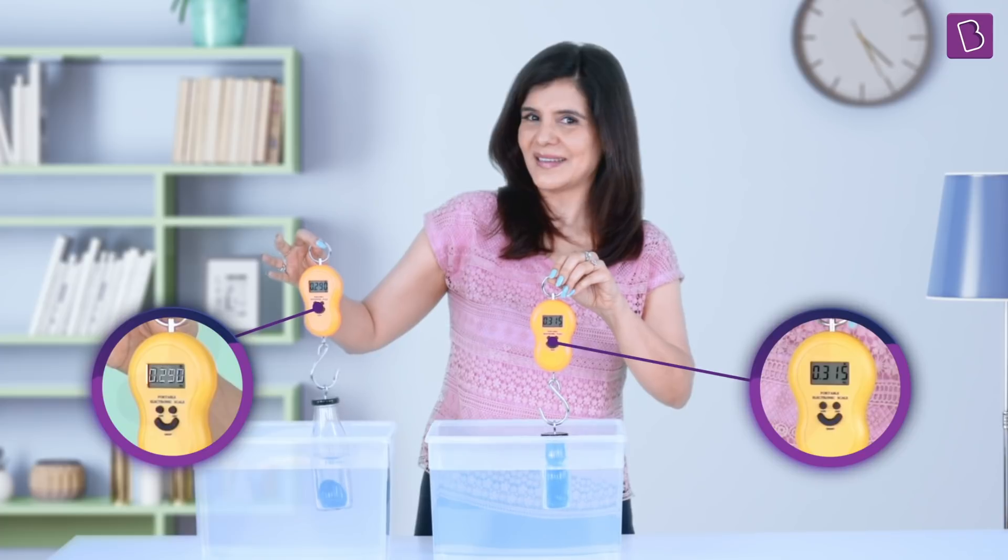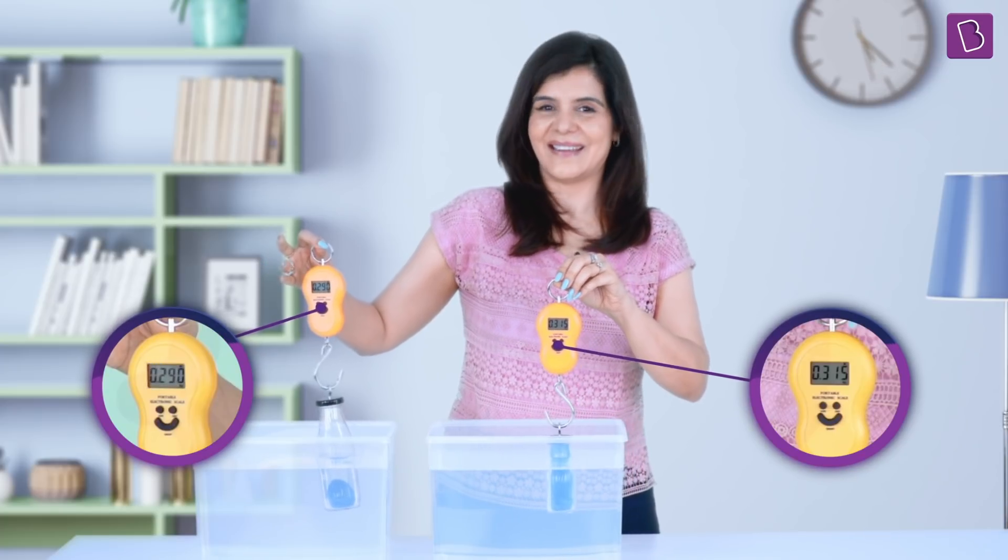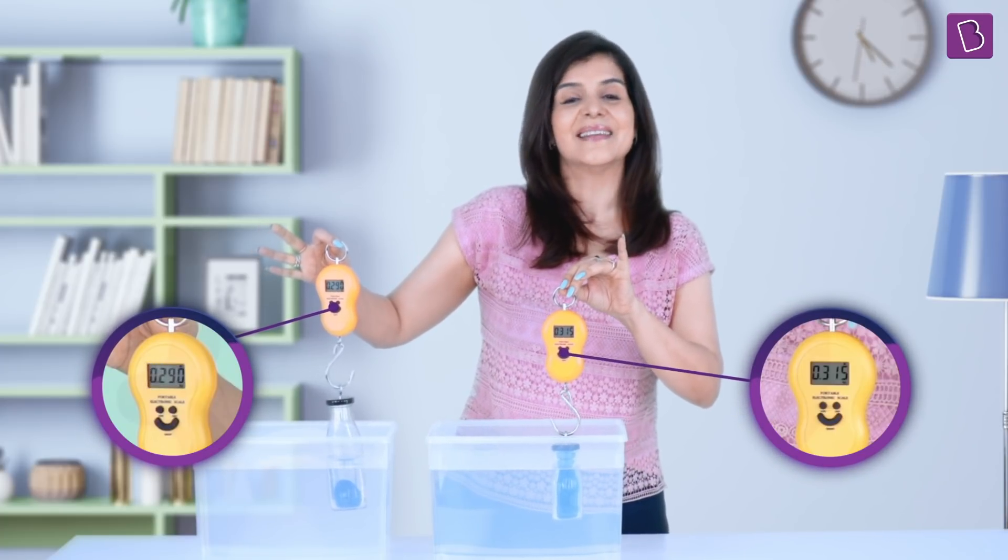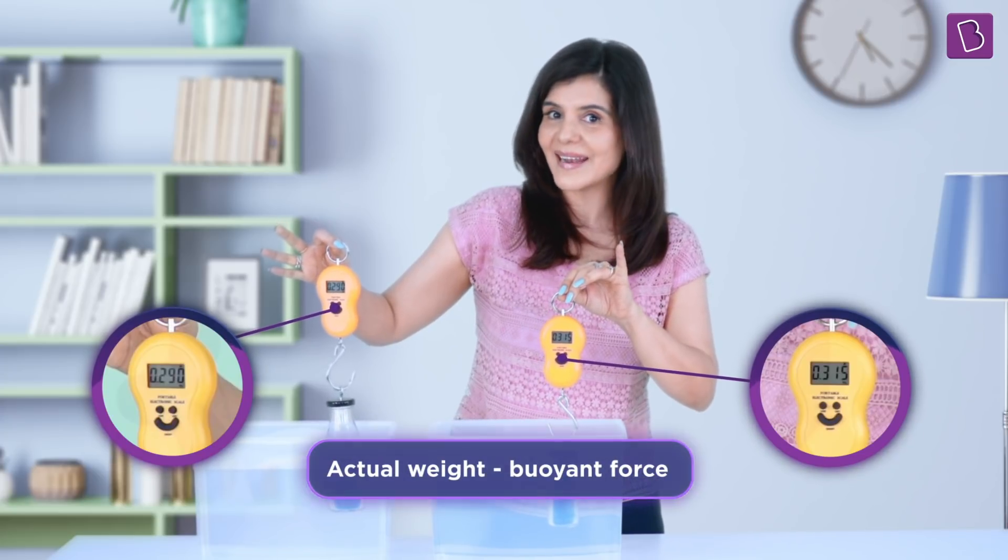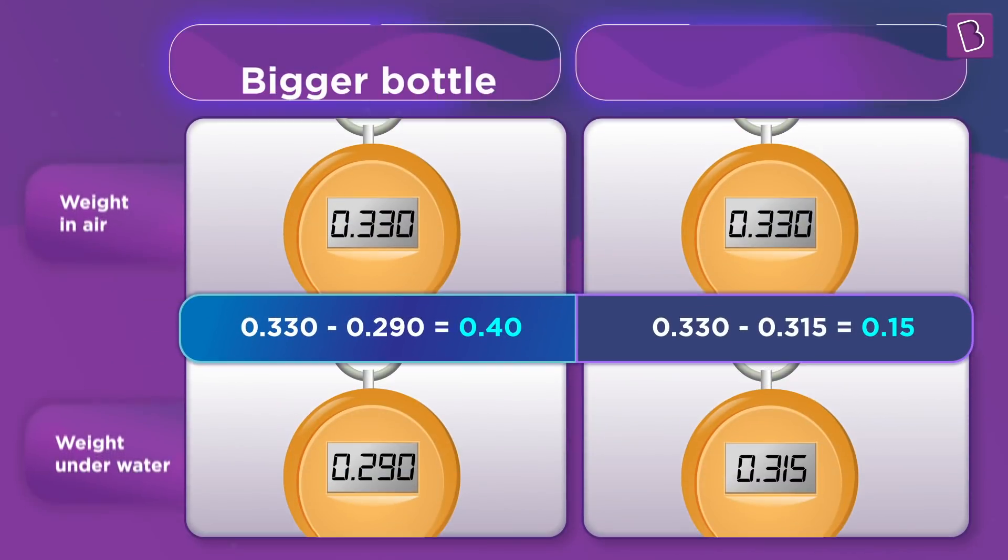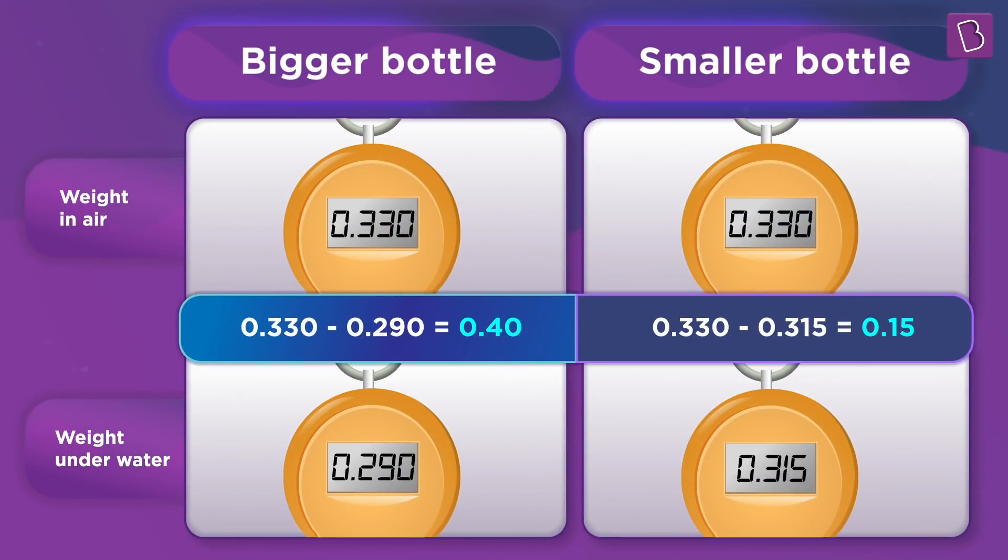Think and tell me why you think that would happen. Yes, the reading on this spring balance is actually the weight of the bottle plus the sand minus the upward buoyant force. Now, greater is the decrease in the value of the reading, the greater is the buoyant force. And as you just saw from the change in the reading, the object with the greater volume experiences a larger buoyant force by water.